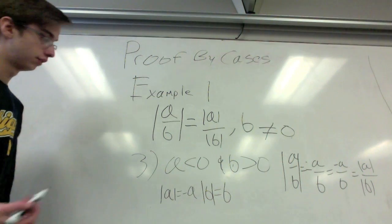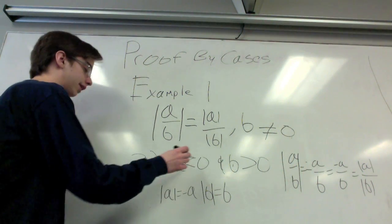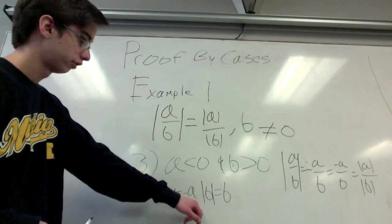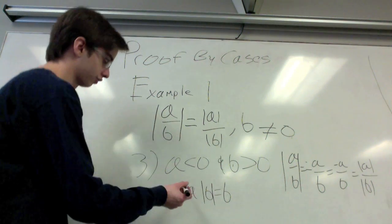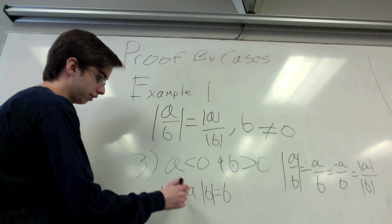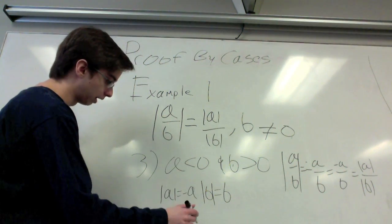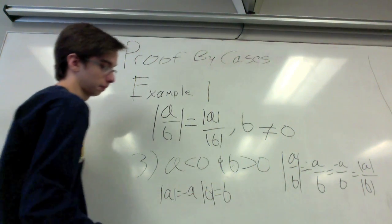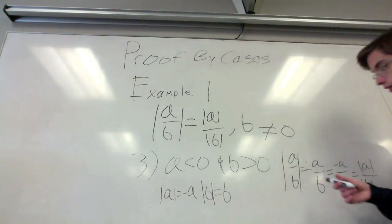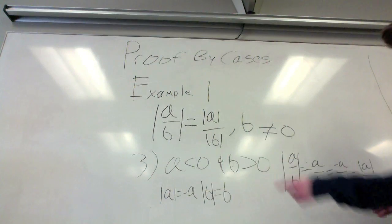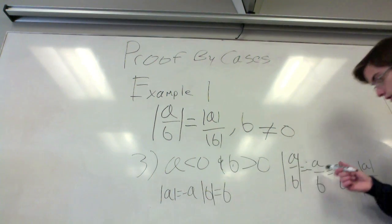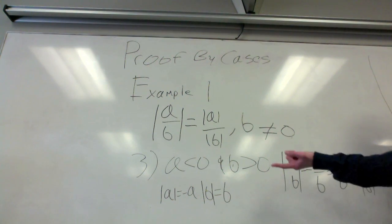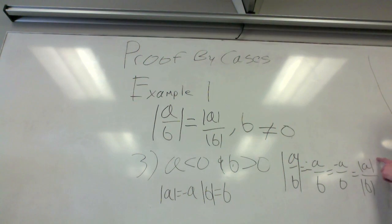Case three: A is less than zero and B is greater than zero. Since B is always positive, the absolute value of B equals B. Since A is always negative, the absolute value of A equals negative A. In the original statement, we negate it because A is always less than zero. We substitute B for the absolute value of B, and negative A for the absolute value of A, proving the statement again.